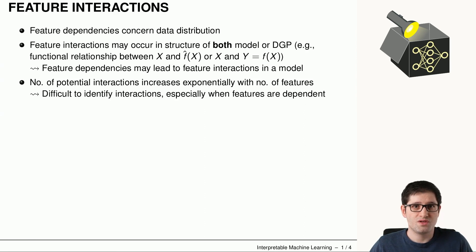One thing to note is that feature interactions usually increase exponentially if we have more features. Because we not only have two-way interactions, but can have interactions between multiple features. Three, four, five or more. And here it's difficult to identify which interactions are important, especially if we have complicated data with a lot of dependencies.